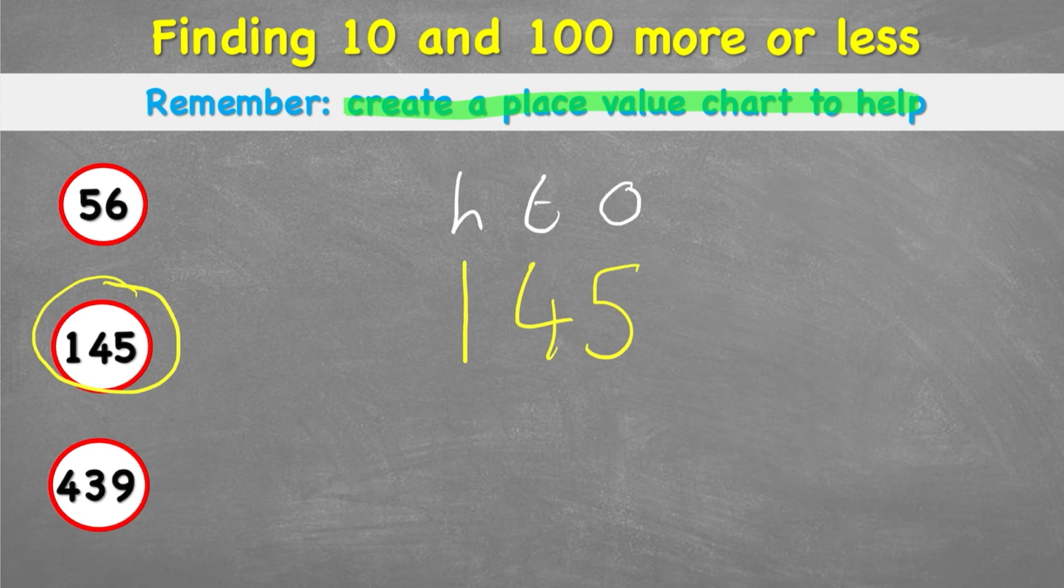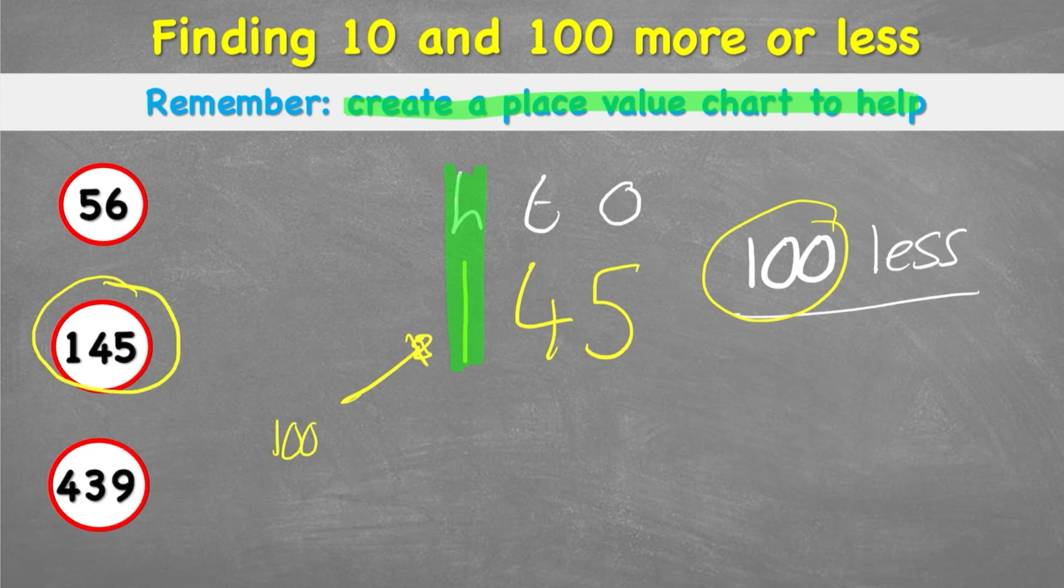But what about 100 less? Well let's do the same thing. We know we're looking in our hundreds column. And I can see I have a 1. So this 1, don't forget, is a 100. What is 100 less than 100? Or in other words, 100 take away 100. Well, that's 0. So I end up with 0 in the hundreds column. I can bring down my 4 from the tens column and bring down my 5 from the ones column. So my answer is 0 hundreds and 45, or in other words, 45.